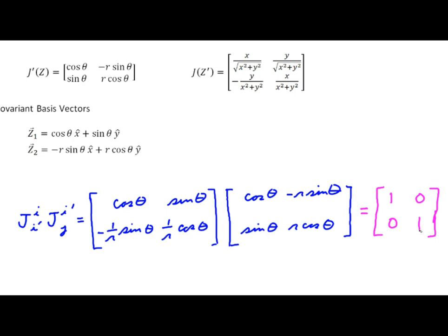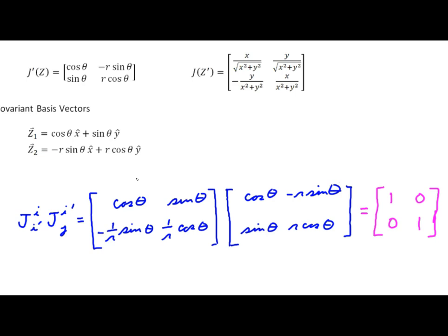A couple of quick notes: when we have this relationship, it doesn't matter whether you multiply this matrix by that one or swap the order — you'll get the same result. That's a general property of any two matrices that are inverses of each other. And secondly, it's a general principle of all Jacobians — it works for two dimensions, three dimensions, doesn't matter. I'd recommend that you go back to the other coordinate systems we've been working with and prove to yourself that this is true in every case.